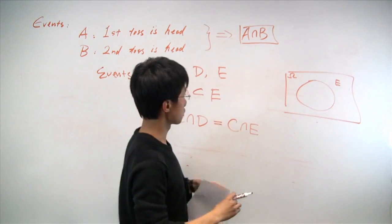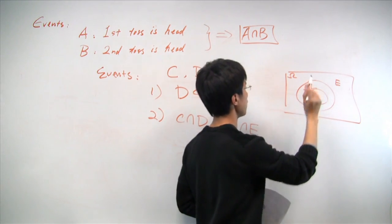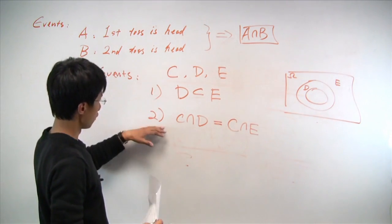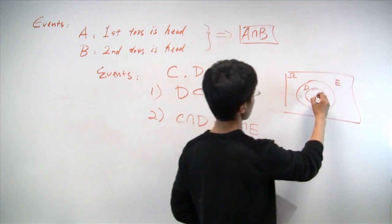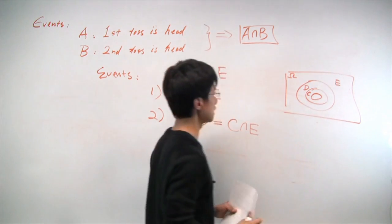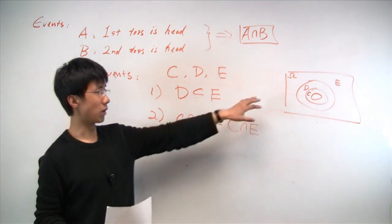Now, by the first condition, D will have to lie somewhere in E. For the second condition, we'll pick some event C, such that this is true. And one way to do so is simply picking C that lies within both D and E.